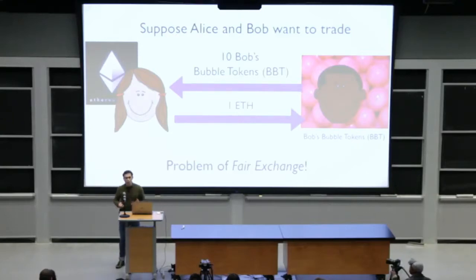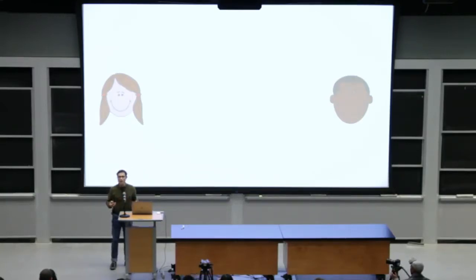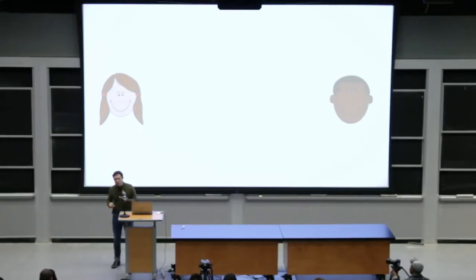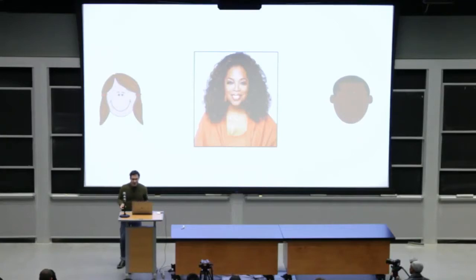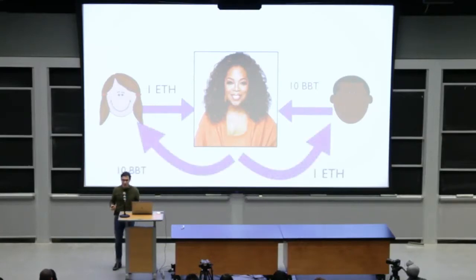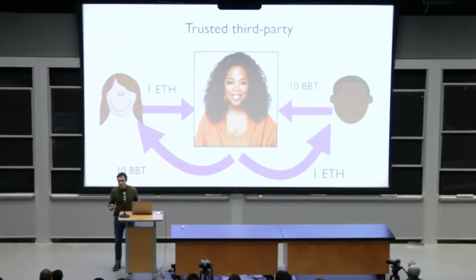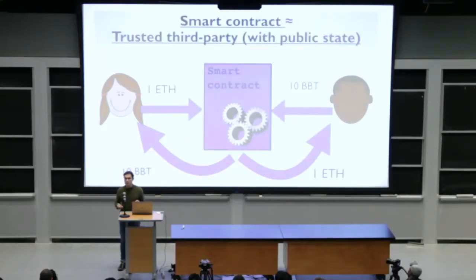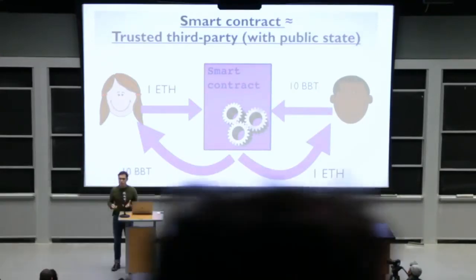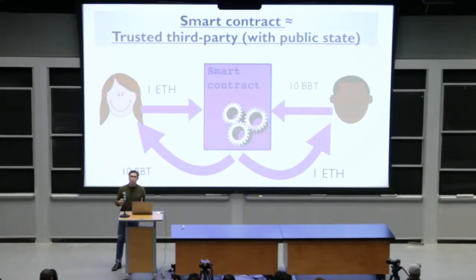How would Alice and Bob ideally resolve this problem? Ideally, they would like to appeal to a third party whom everyone in the world trusts to behave in an open, even-handed, and honest manner. In other words, what they really want is Oprah. If they had Oprah, life would be simple — they could send their assets to Oprah and she would distribute them fairly. What they really want is a trusted third party. Since Oprah is generally booked, this is the reason we appeal to smart contracts. Smart contracts in essence emulate a trusted third party to accomplish fair exchange and the many other goals we try to achieve in blockchains.